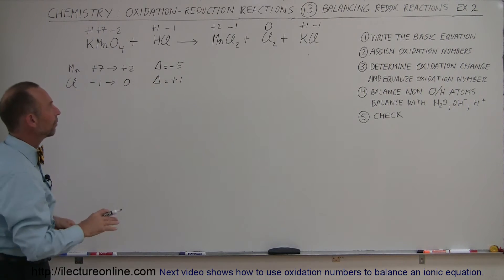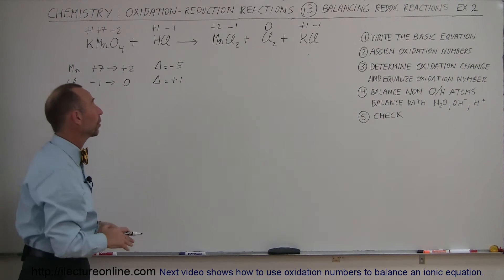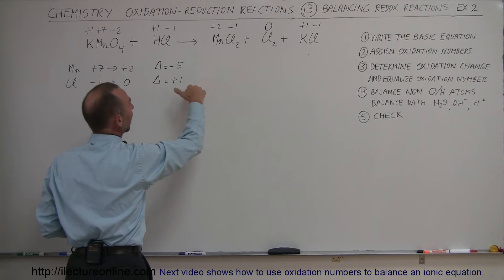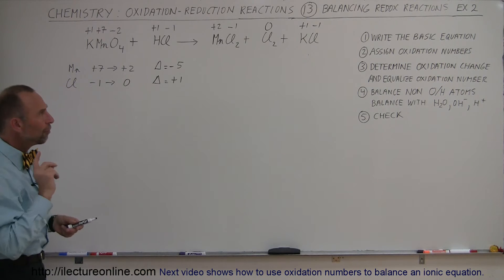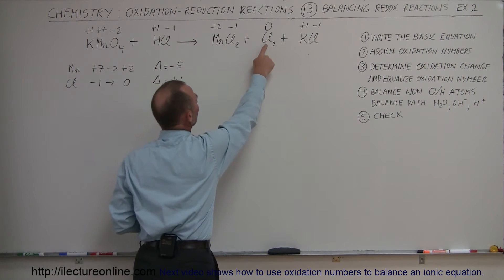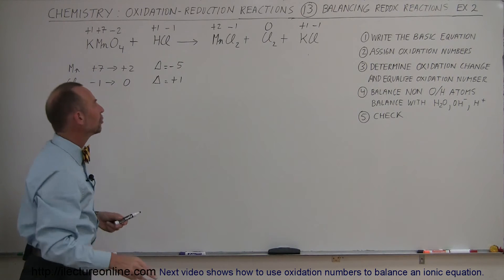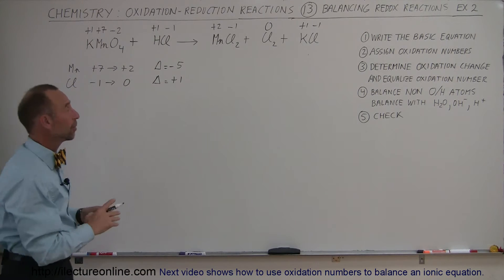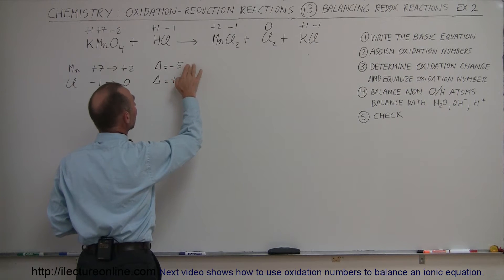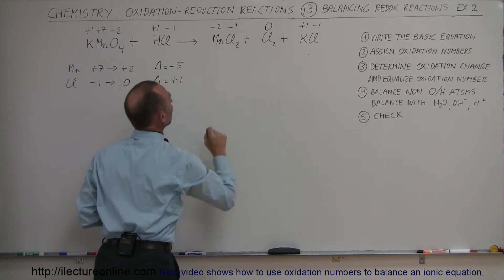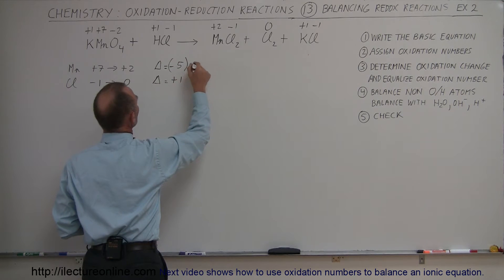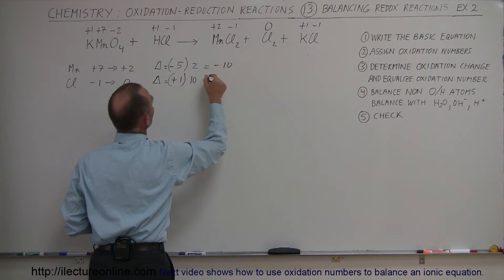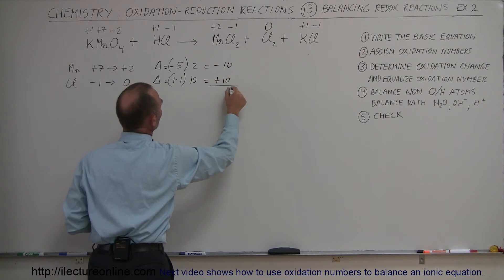Now we want to find a number that will equalize those two changes. The first reaction would be to say: if I multiply this one by 5 and this one by 1, then I have minus 5 and plus 5 — they balance each other out. But not so fast, because chlorine gas is a diatomic molecule, which means you need two chlorines to make a diatomic chlorine gas molecule. For that reason, we actually have to multiply the manganese by 2 and the chlorine by 5, making the changes minus 10 and plus 10 — and at that point they're balanced out.